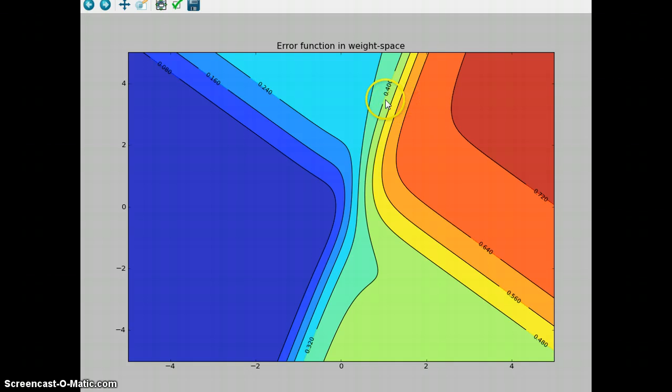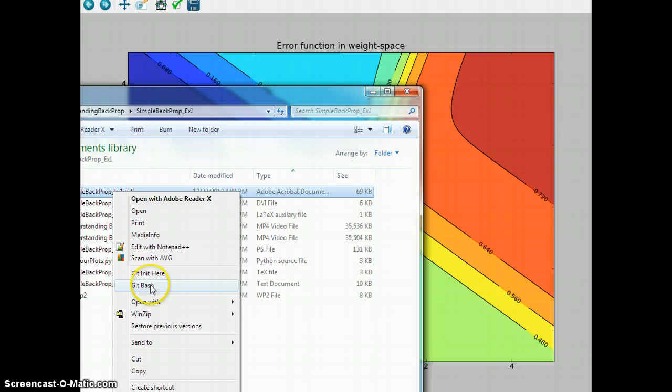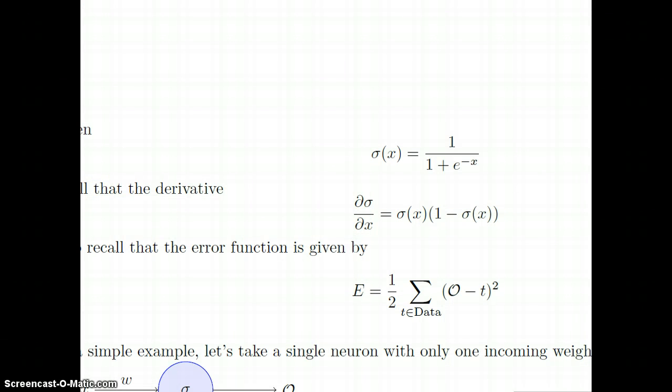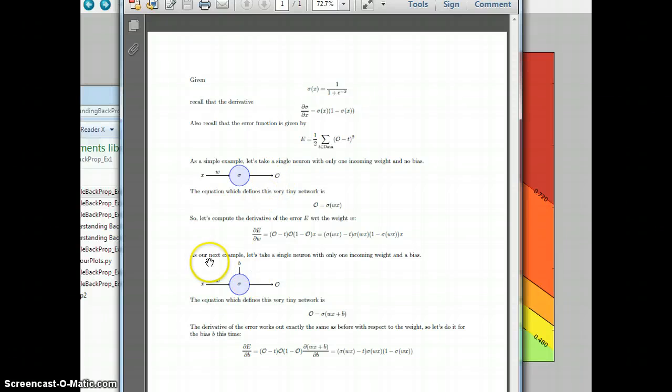And then we're adjusting them a little bit and checking it again. So, what you're looking at here is, on the x-axis between negative 5 and 5, I plotted the error function for weight values.